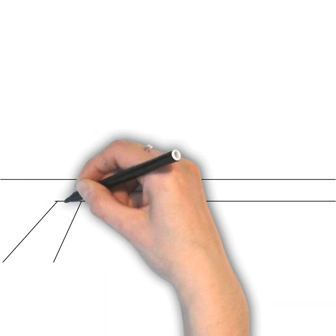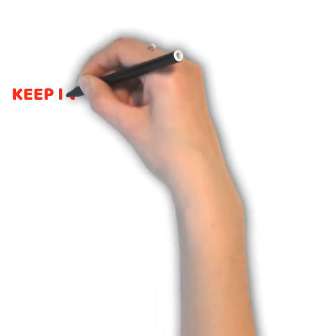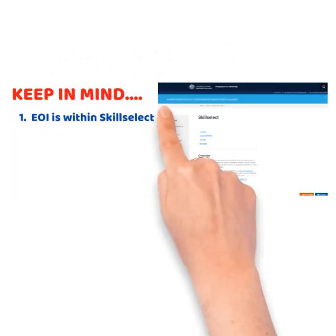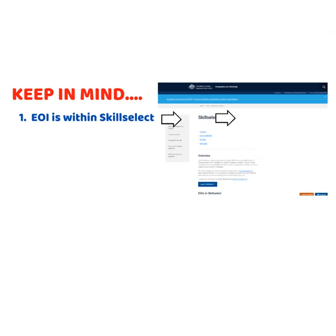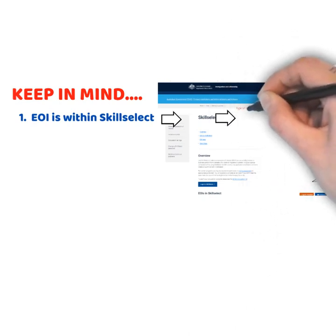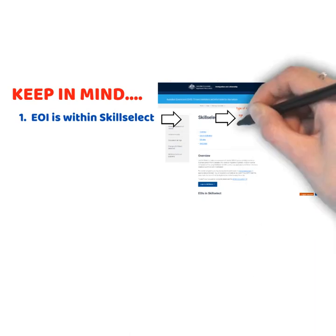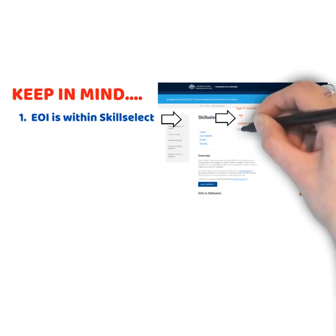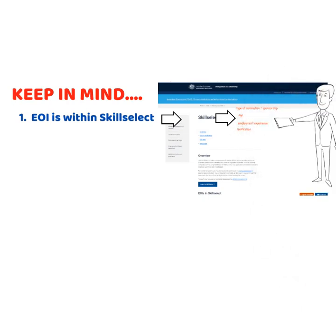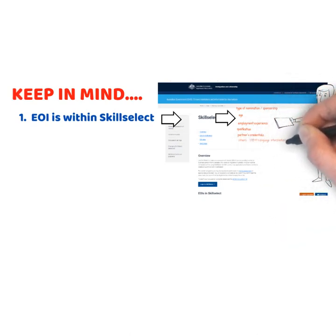There are some points you need to know about EOI. Number one: EOI, or Expression of Interest, is within SkillSelect. SkillSelect is a portal within the Department of Home Affairs website where you declare all your claims about yourself — the type of nomination or sponsorship you intend to apply, your age, your employment experience in and out of Australia, the qualifications you obtained in Australia or overseas, your partner's credentials, and all other relevant matters that could attract more points.